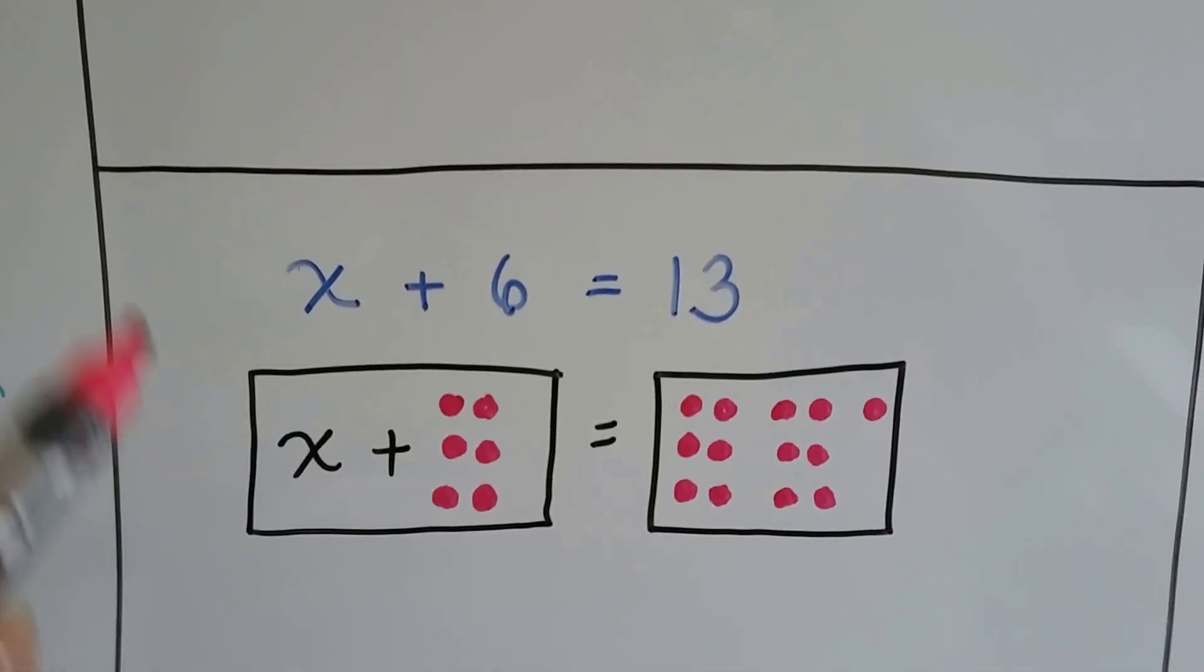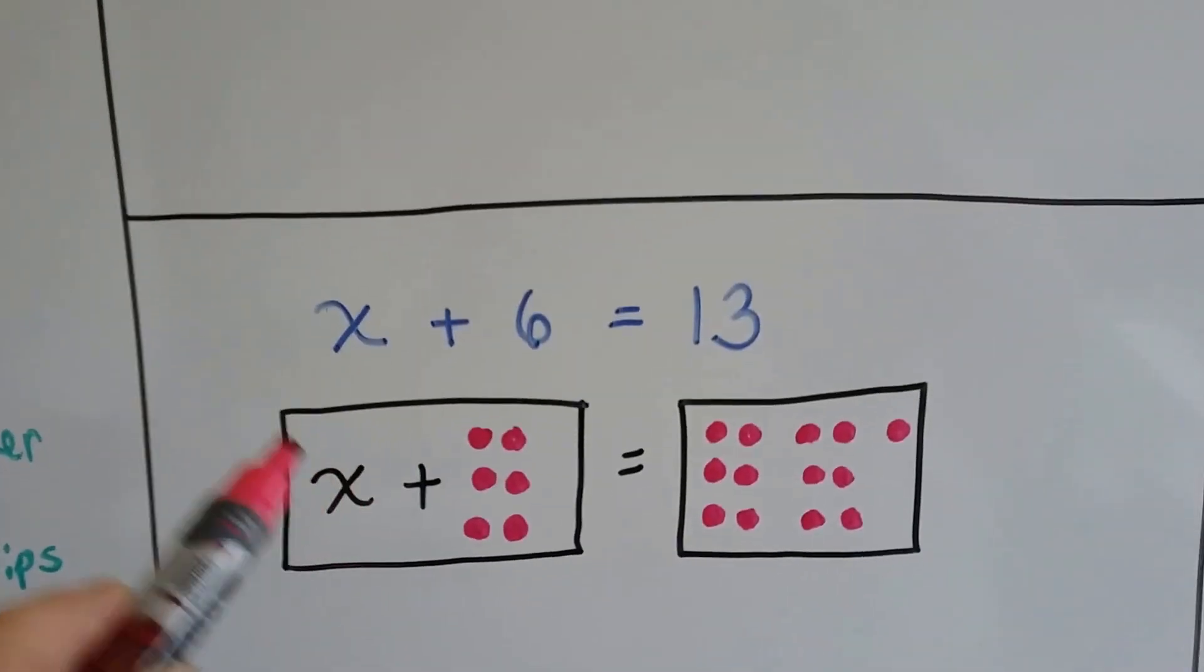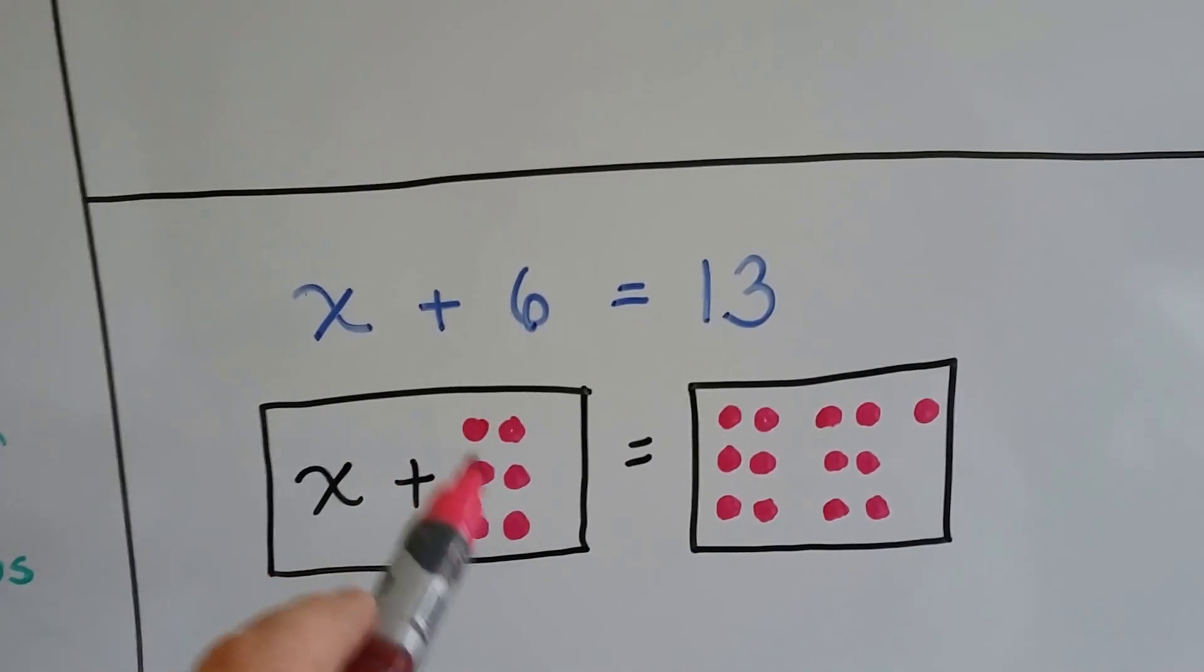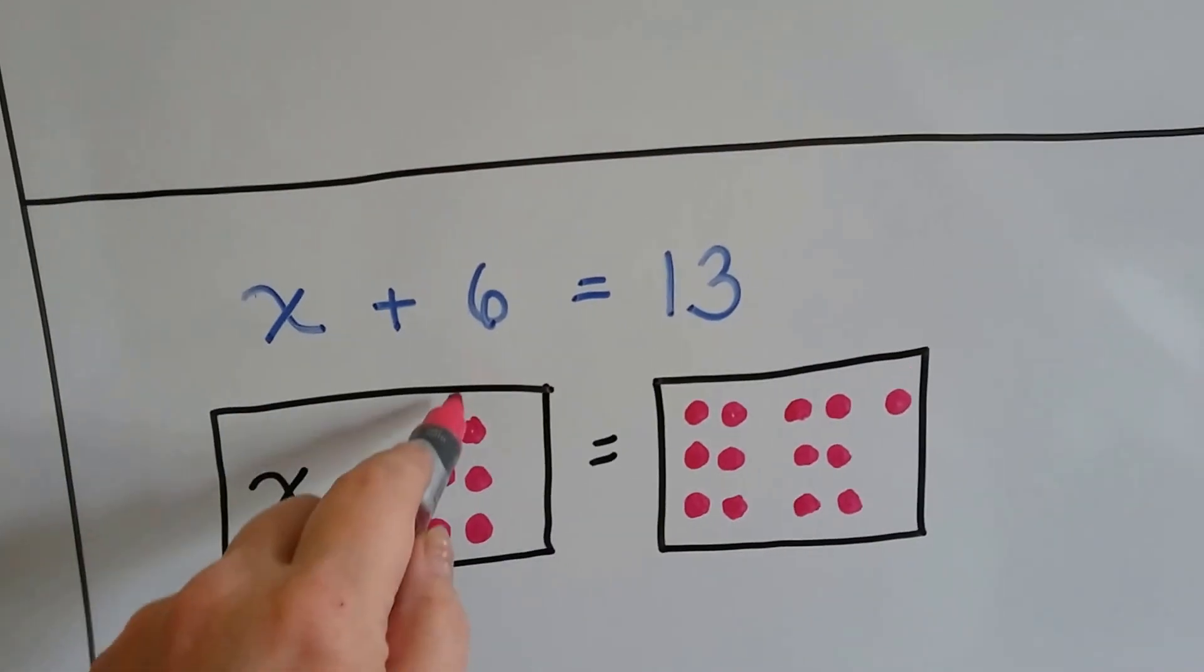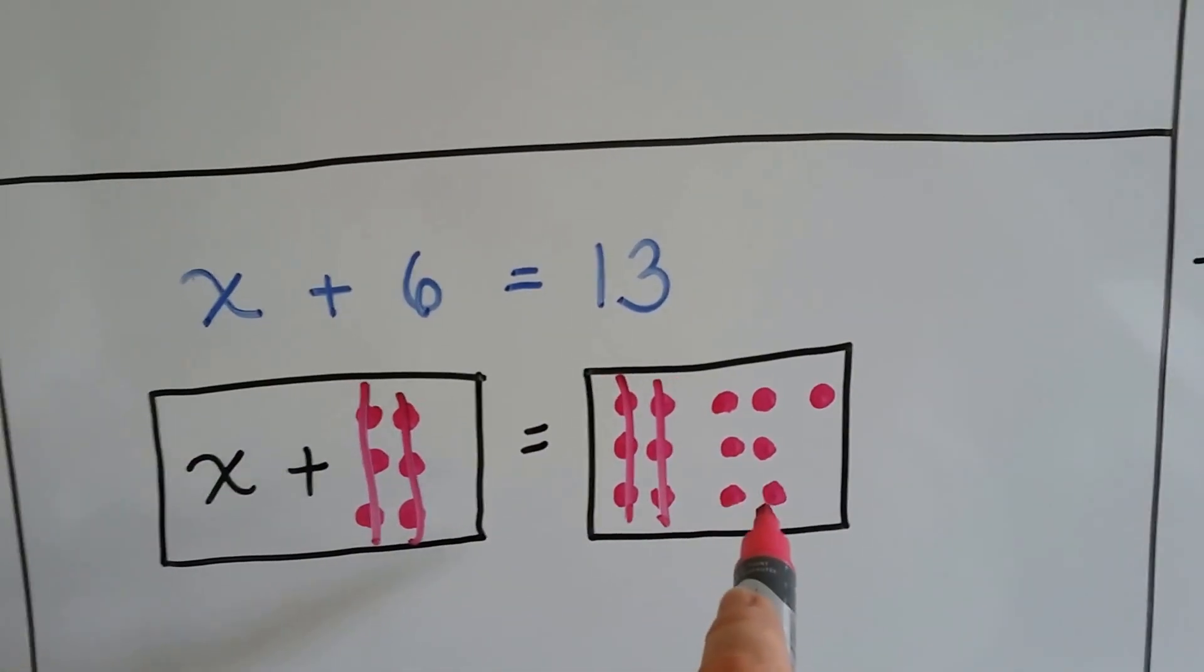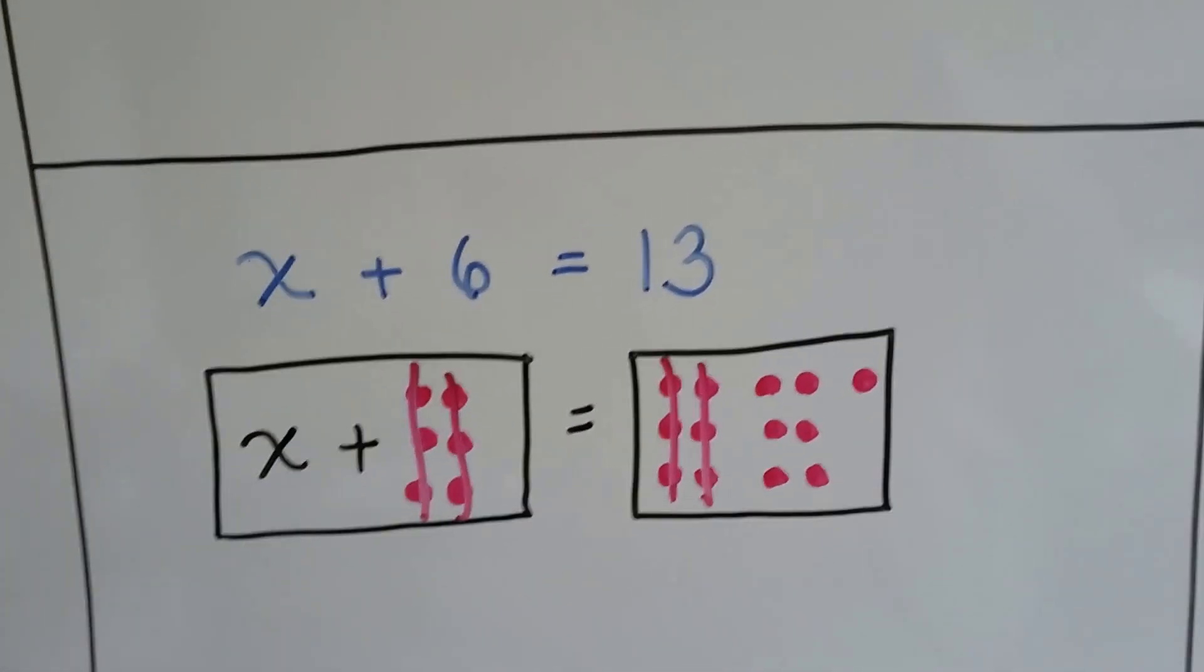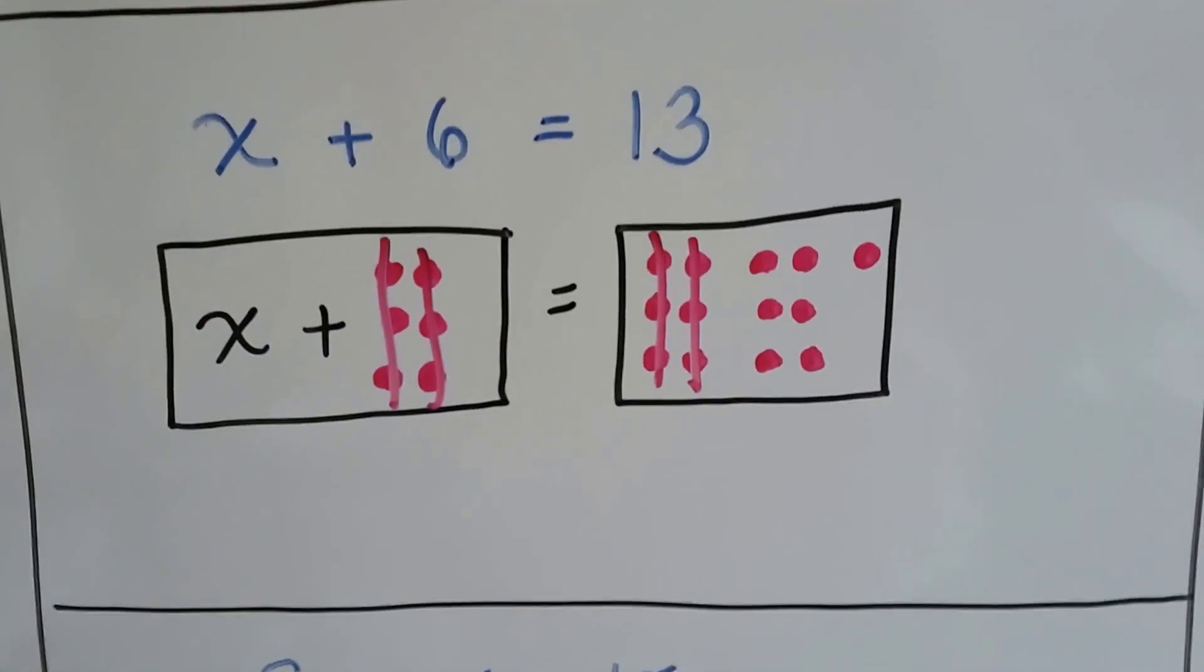Let's try it again. This time x is first again. We've got x plus 6 equals 13. So we're going to take these 6 away so that the x is by itself and we're going to take 6 away from this one. So we take these away and we take these away and what we're left with is x equals 7. It's called isolating the variable.